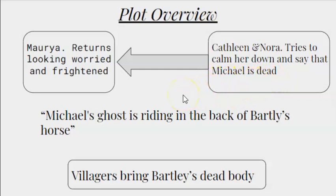After this scene their mother returned looking very worried and frightened. She reports that she saw Michael's ghost or spirit riding on the back of Bartley's horse. She was very shocked because she did not yet know that Michael was already dead. Then her daughters try to comfort her and tell her that Michael had died. After hearing this she gets a tremendous shock. Then some villagers bring the dead body of Bartley, reporting that the horse knocked Bartley into the sea and he drowned. Moria gets the holy water and sits beside Bartley's dead body, sprinkling holy water on him and saying that now she can sleep well and has nothing to worry about, as all her sons including her husband have drowned in the sea.